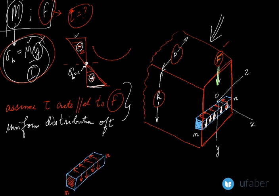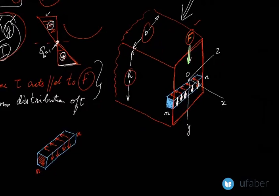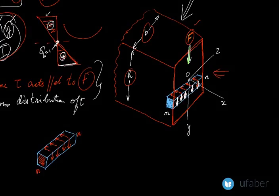Now let us zoom in and focus attention on section MN drawn here. This is a small element MN located between two planes within the beam cross-section.